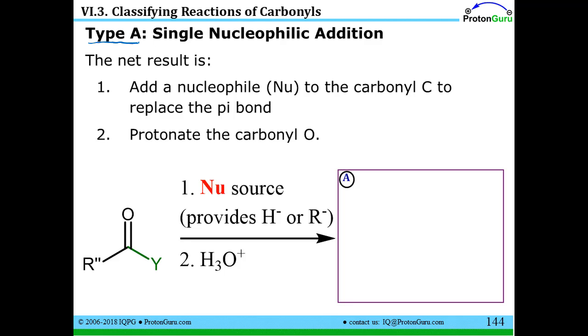Type A is what is called single nucleophilic addition. You should be able to find nucleophilic addition to carbonyls online or in other textbooks. The net result is you add a nucleophile to the carbonyl carbon, and that's going to replace the pi bond.